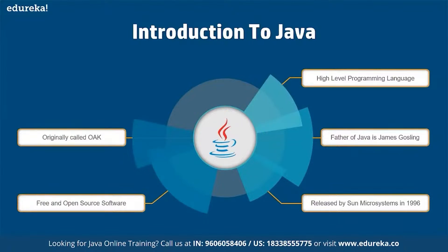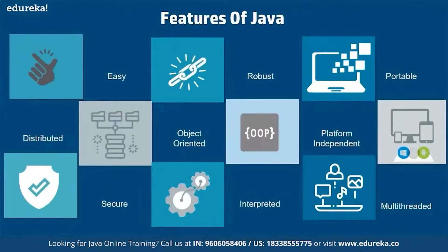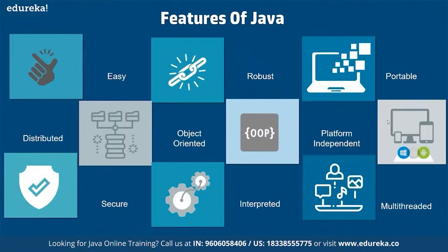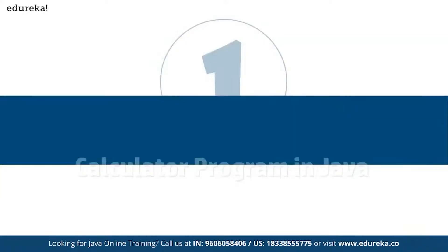Java was originally called Oak. In terms of features: it is easy to use, it follows distributed architecture, it is more secure compared to other platforms due to multi-level abstraction and data security features, it is fully object-oriented, highly integrated, platform-independent — write once, run anywhere — and it is multi-threaded as well.